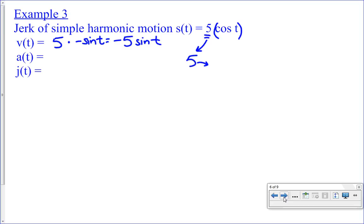There you go. That's velocity. Now, what's acceleration? I need to take the derivative of velocity, right? This right here is the same thing as taking the second derivative of position. This is the derivative of velocity. So, it's negative five times what's the derivative of sine? Cosine t. Therefore, it's negative five cosine t. That's the acceleration.